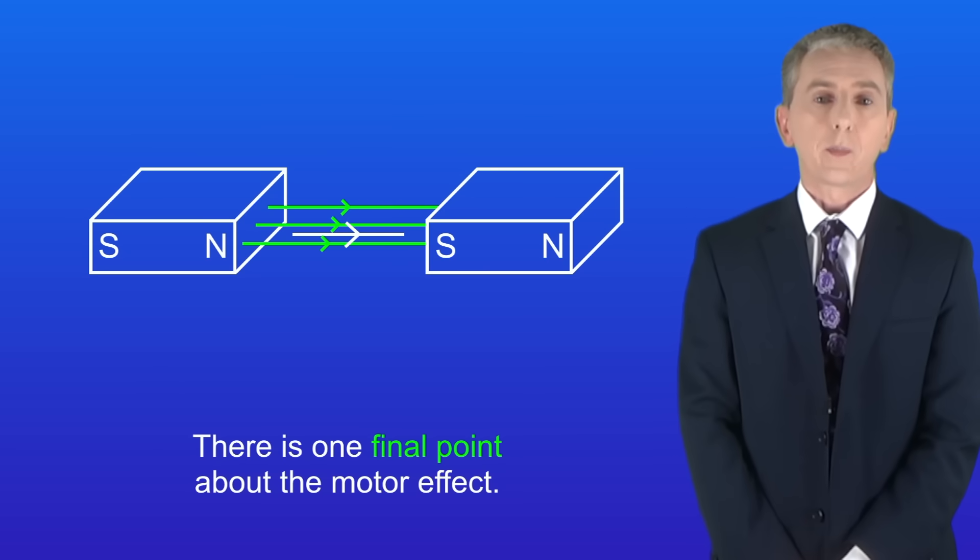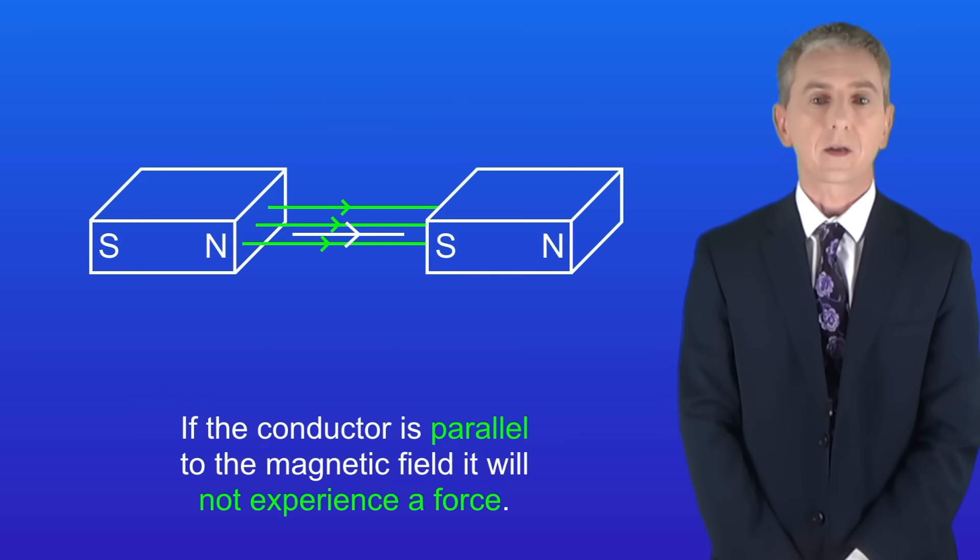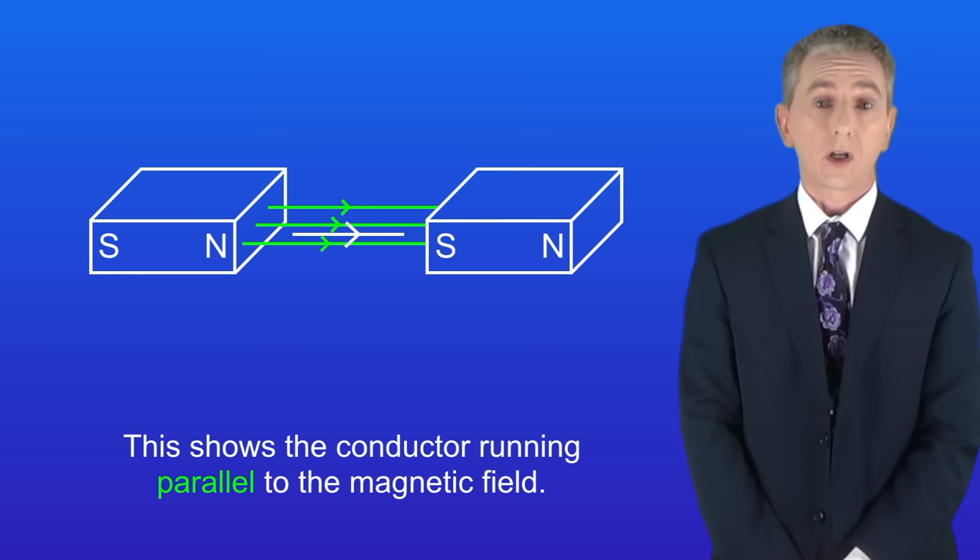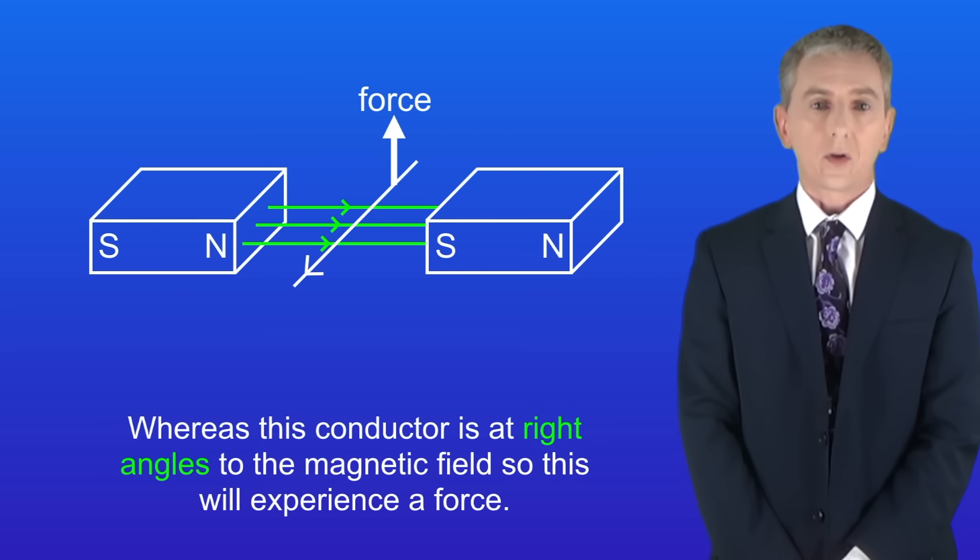Now there's one final point about the motor effect. If the conductor is parallel to the magnetic field then it will not experience a force. So this shows the conductor running parallel to the magnetic field and this conductor will not experience a force. Whereas this conductor is at right angles to the magnetic field, so this will experience a force.